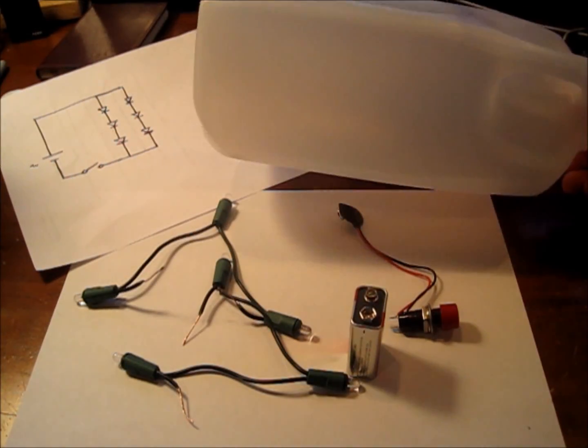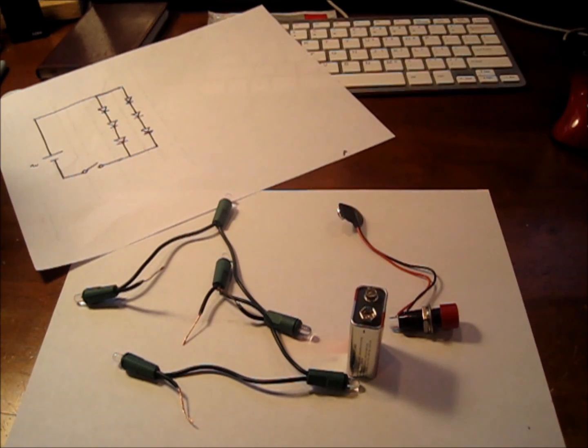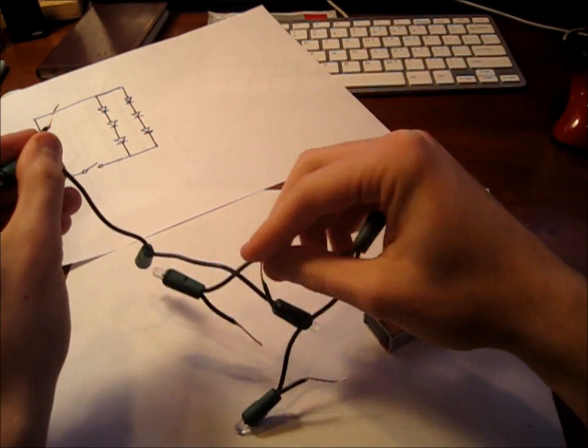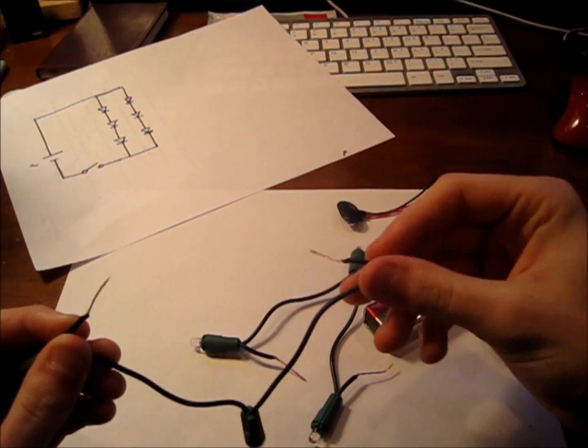Okay, so now that you have the labels off the half-gallon container, I'm going to take the LEDs. You can see I've just stripped them on both ends just to make it a little bit easier to connect them to each other.